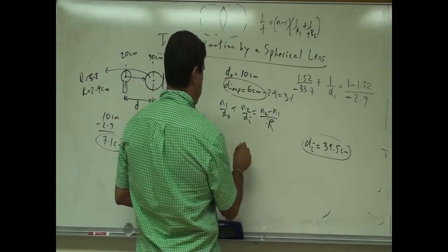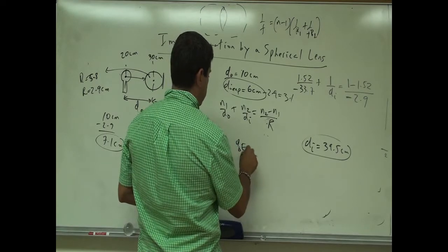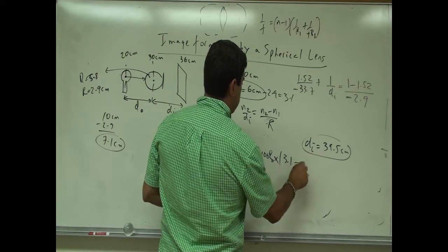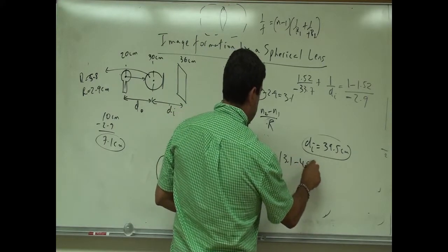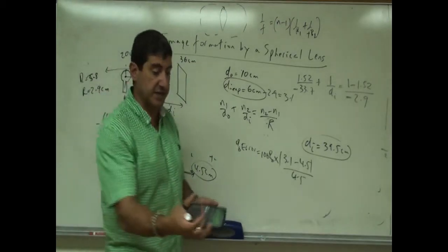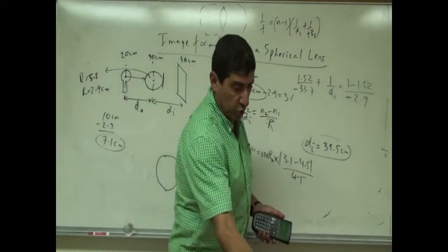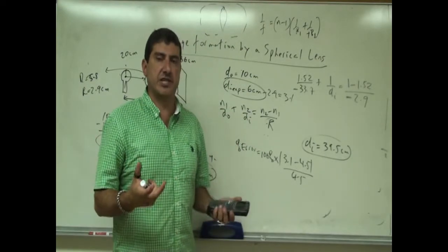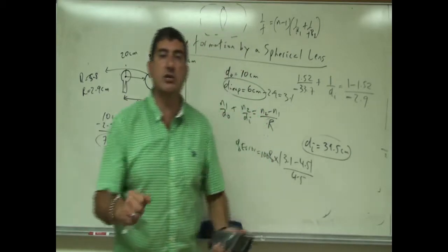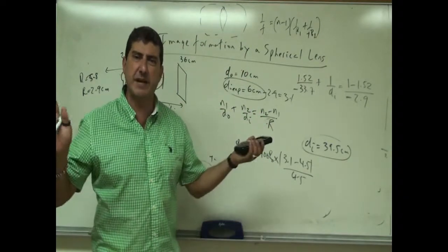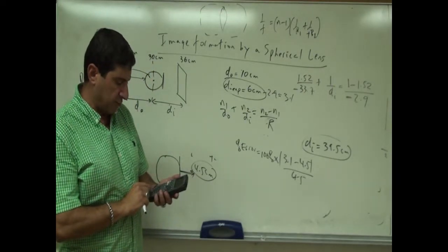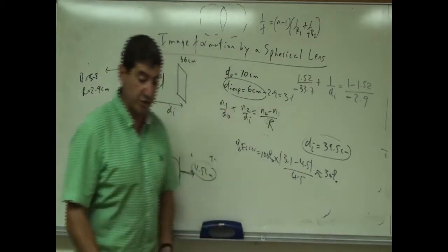The percent error is 100% × |3.1 − 4.5| / 4.5. I'm pretty glad about that answer because I was just holding the sphere in my hand without knowing the exact center, and I was moving the screen by hand too. Even with that, I got about 30% error — not bad for the calculations.